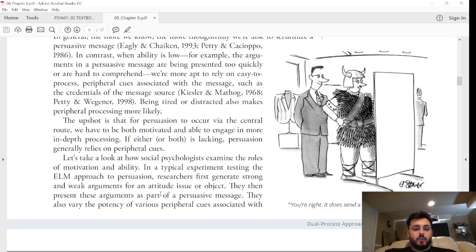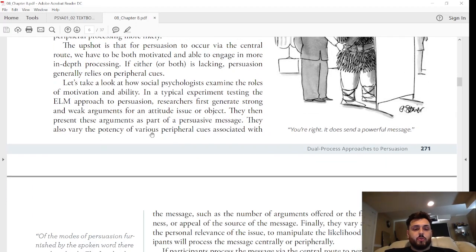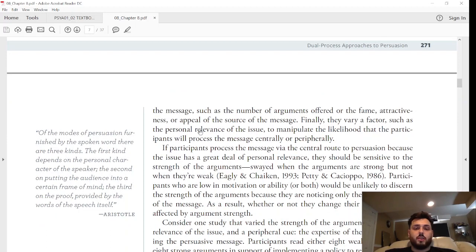Let's take a look at how social psychologists examine the roles of motivation and ability in a typical experiment testing the ELM approach to persuasion. Researchers first generate strong and weak arguments for an attitude issue or object. They then present these arguments as part of a persuasive message. They also vary the potency of various peripheral cues associated with the message, such as the number of arguments offered or the fame, attractiveness, or appeal of the source of the message. Finally, they vary a factor such as the personal relevance of the issue to manipulate the likelihood that the participants will process the message.